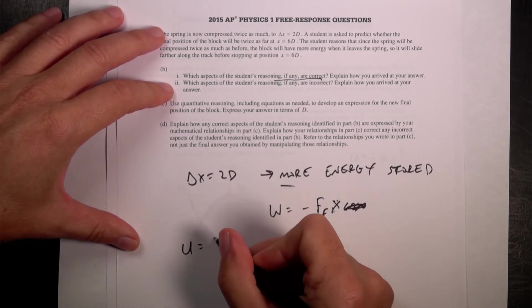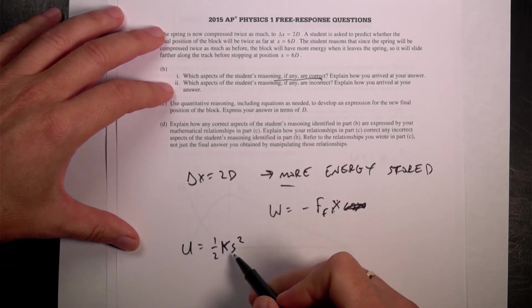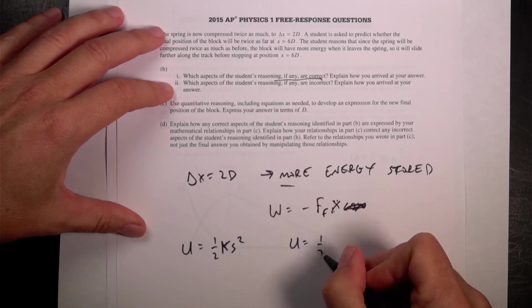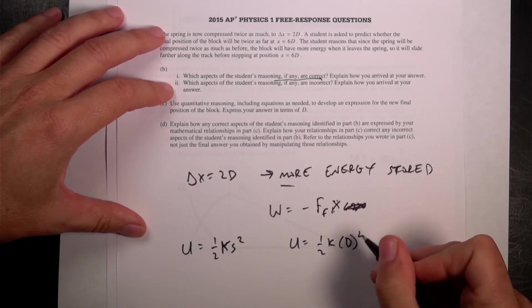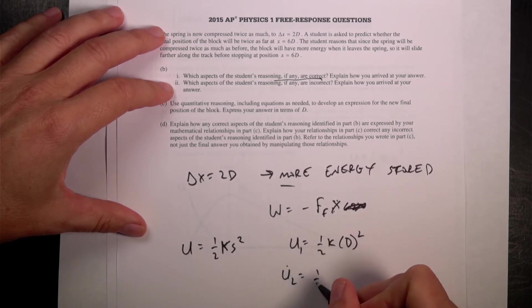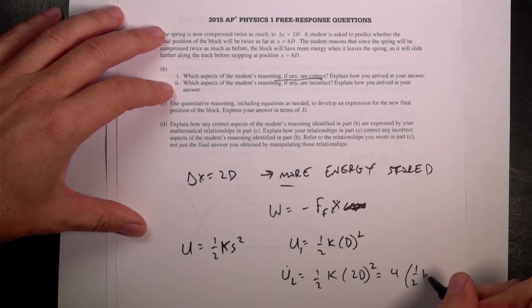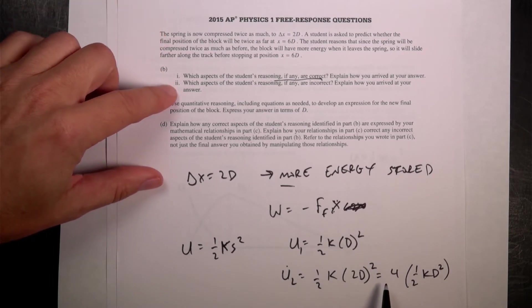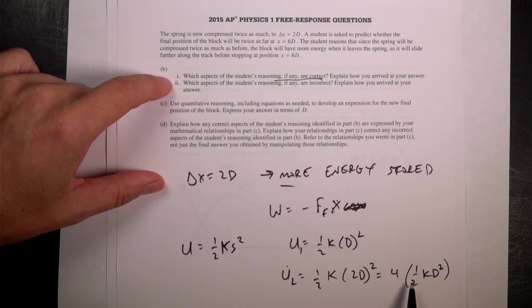Which aspects of the student's reasoning are incorrect? What's incorrect is that the energy stored in the spring is one half k s squared. So if you double this s, if I do, let's say the first one, u1 is one half k d squared. u2 is one half k times 2d squared, and that's going to be four times one half k d squared, right? Because I have to square that two also. So I actually have more energy, but it's not twice as much, it's four times as much. And so that's the wrong, it won't go twice as far, it'll go four times as far.